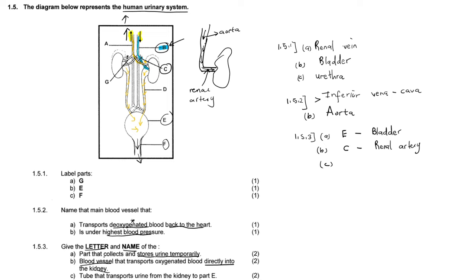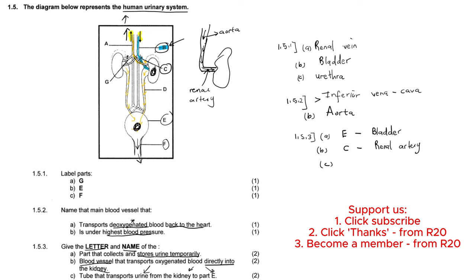Part C: give the letter and the name of the tube that transports urine from the kidney to part E. It is transporting urine from the kidney to the bladder. That is part D, moving all the way to the bladder. Those are known as the ureters — the tube that transports urine from the kidney to the bladder. So the label is D, ureter.